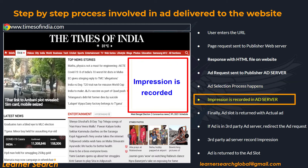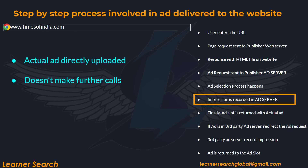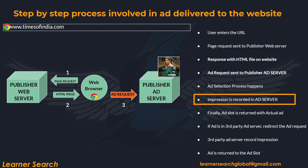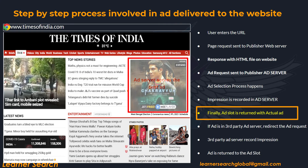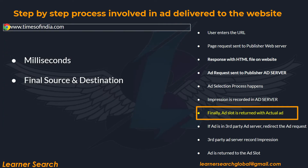The ad server then records the impression for that ad request. If the actual ad is directly uploaded in the publisher ad server, it doesn't make any further calls and responds to the ad request to deliver the selected ad to the ad slot on the web page. Users now see the ads on the website. This whole process takes milliseconds, and the publisher ad server is the final source and destination of the ad.